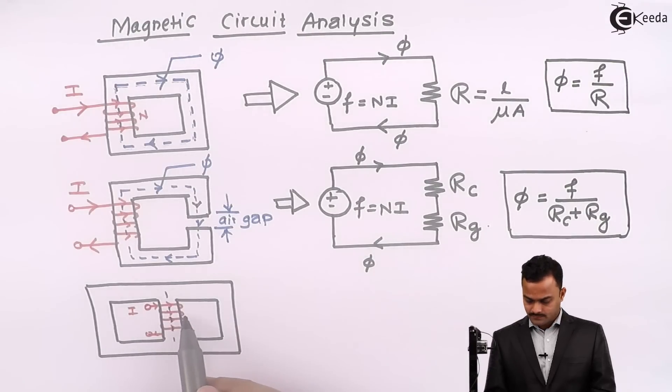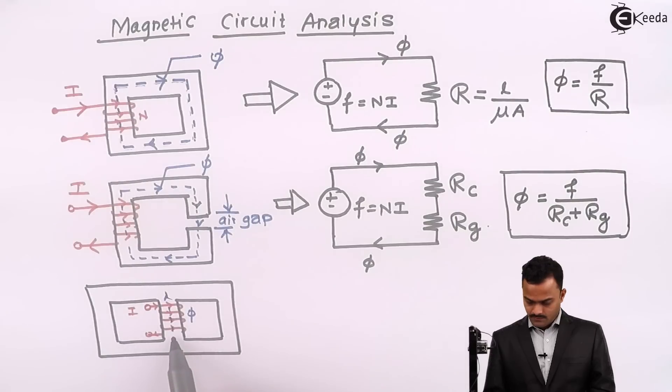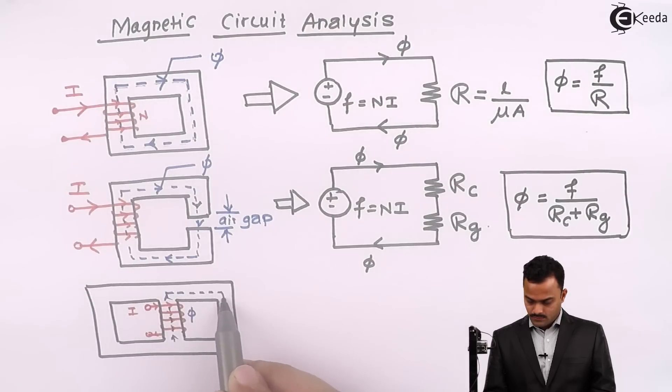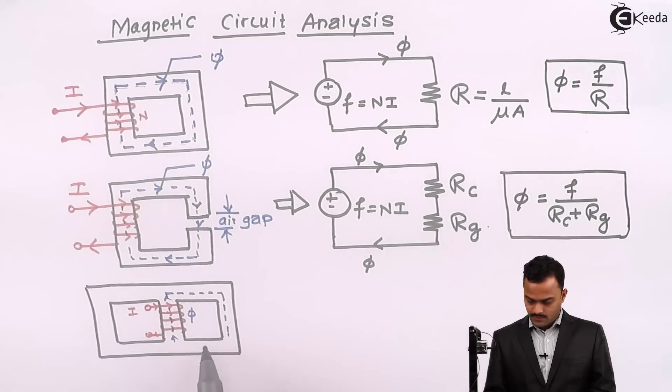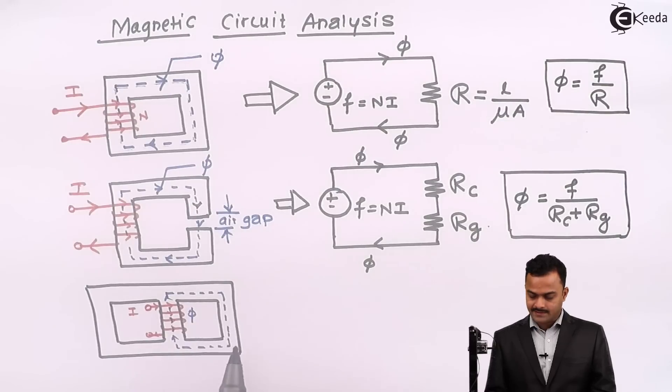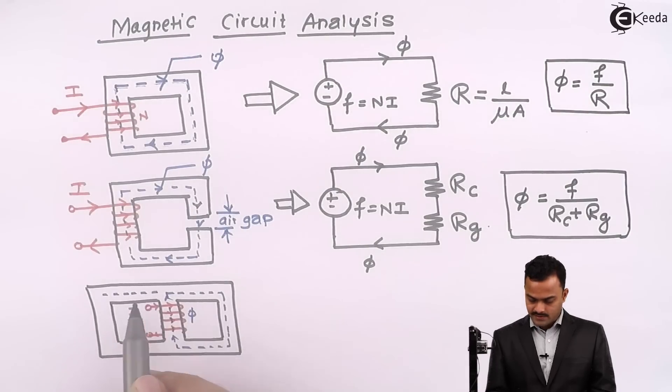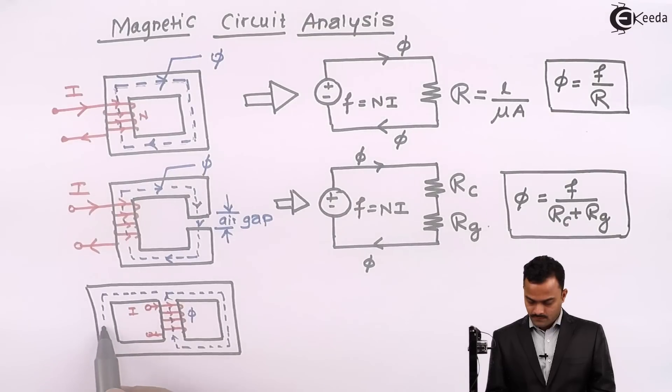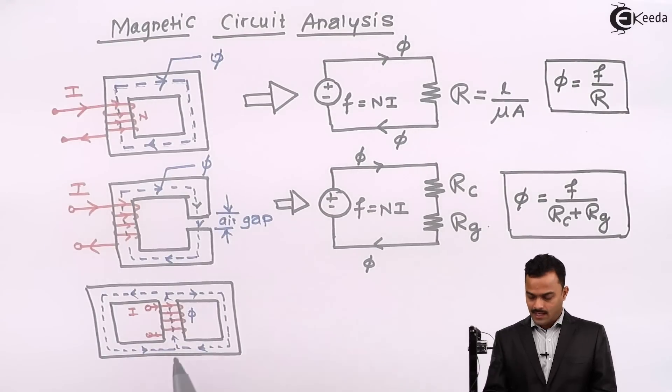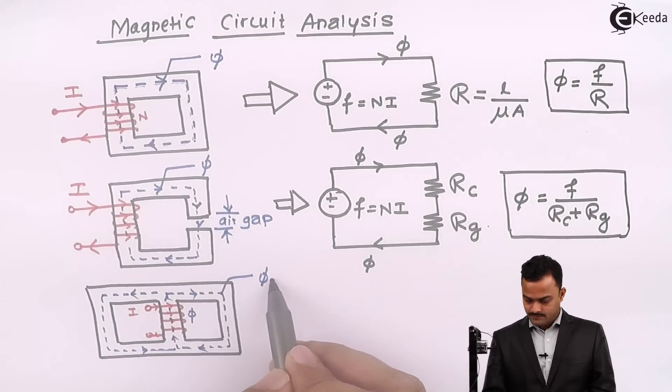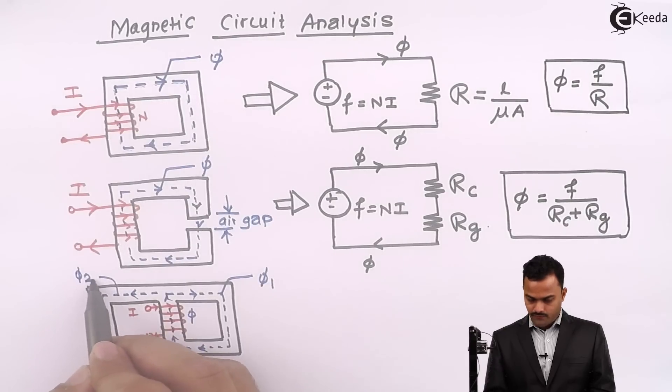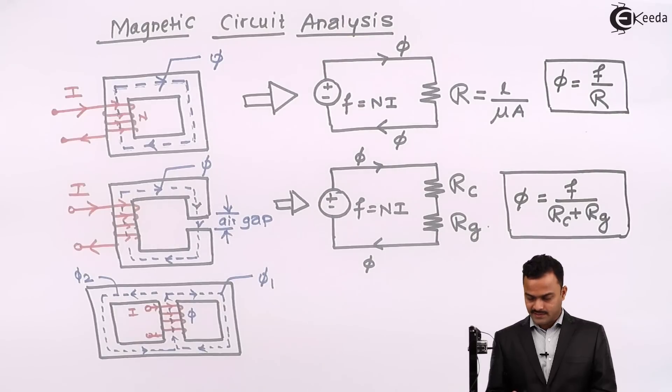flux φ will divide itself so that it will pass through the core like this. One circuit will be completed like this, and the second flux line will be like this. Based on the area and mean length of these sections of the core, I will have different fluxes φ₁ and φ₂. How can we represent this electrically?